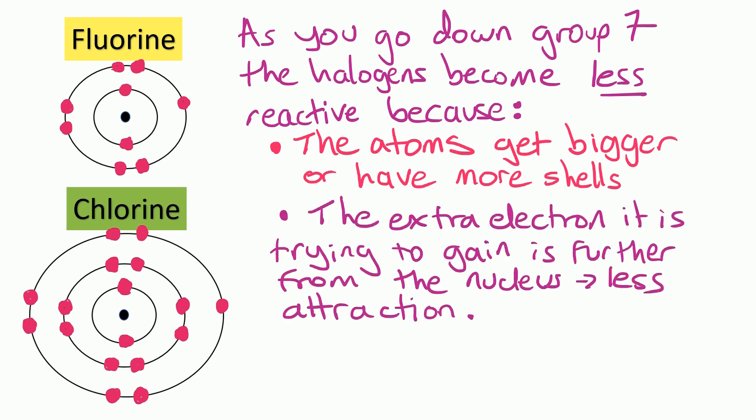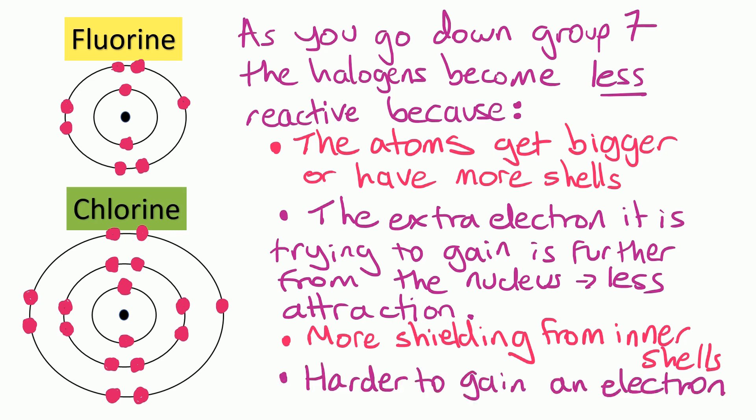So that means the extra electron it's trying to gain is further from the nucleus. So there will be less attraction from the nucleus on that electron. We can also see there's more shielding from their inner shells because there's more inner shells. And that also means there will be less attraction from the nucleus on that extra electron it's trying to gain. So all of these factors mean that as you go down group 7 the halogens find it harder to gain that extra electron. And therefore they become less reactive.